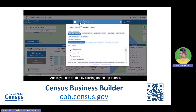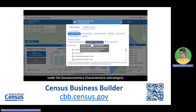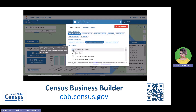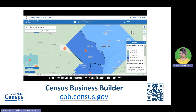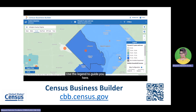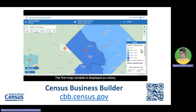You can add a second variable as well — again, by clicking on the top banner or by selecting within the dashboard. Let's target median household income. Look for median household income under the Socioeconomic Characteristics subcategory and make the selection. Let's click on the chevron to collapse the dashboard and see our updated map better. You now have an informative visualization showing the concentration of both variables on the map. The first map variable is displayed as colors and the second map variable will always be displayed as circles. The size and color of the circle represents the number.